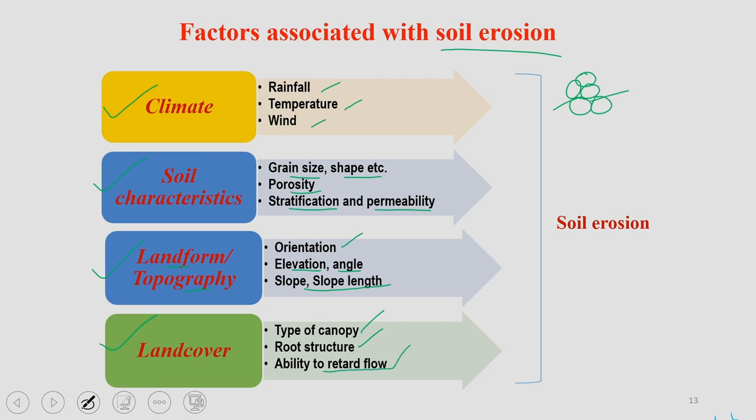When rainfall takes place, it hits the ground with a certain amount of momentum. The water flows across the slope, and the speed of that water needs to be somehow reduced to reduce soil erosion by running water — that is what is meant by ability to retard the flow of water. These are the factors which basically impact soil erosion.